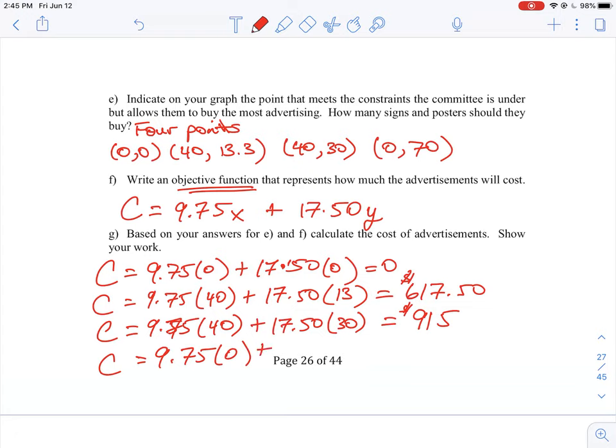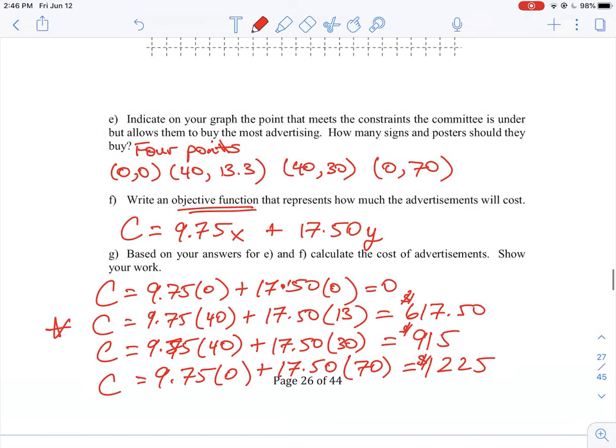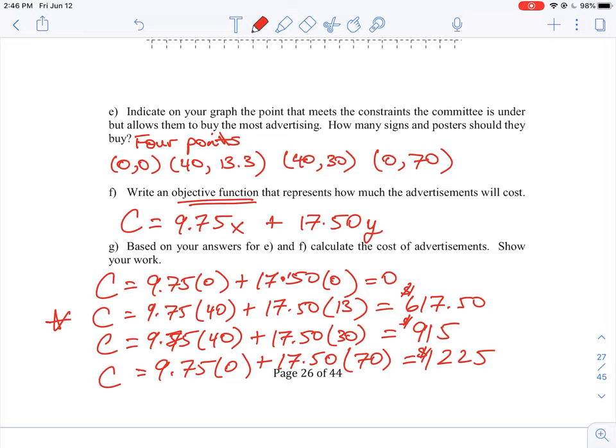So the last one we're allowed to buy zero. And then we are buying posters, but we're buying 70 of them. So 17.50 times 70 is going to equal $1,225. So if you're a business, what are you going to do so that you can buy advertising and have the most amount of advertising at the lowest price? So in this case here, we are getting this choice right here. We will only have to pay $617, but we can get 40 signs and 13 posters - 53 items, which would give us our most inexpensive amount, but yet let us buy a certain amount of advertising, the most advertising that we can get.